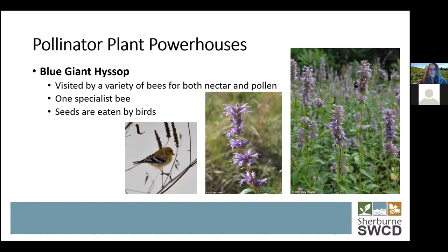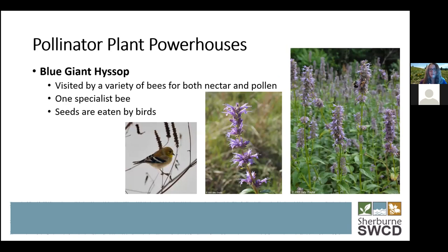The blue giant hyssop is a transitional summer-to-fall plant. It is in the mint family, so it has very aromatic leaves when you crush them. Because of those aromatic leaves, it's not palatable to herbivores, so rabbits, deer, and other animals won't munch on it — an added benefit. It provides great nectar and pollen for bees and butterflies, and like vervain, provides seeds for birds in winter. Hyssop is mostly adapted to prairie-like settings, but it can also do well in medium-wet soils — full sun though.